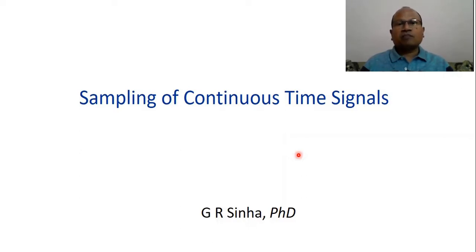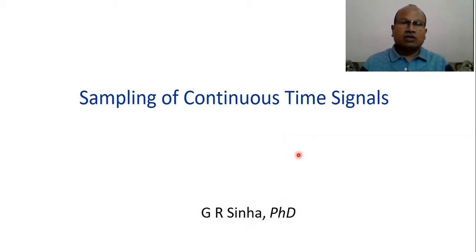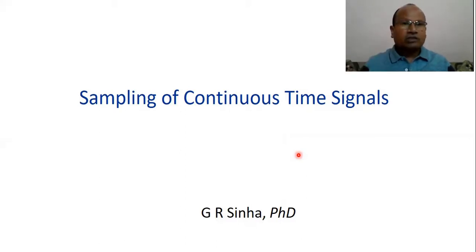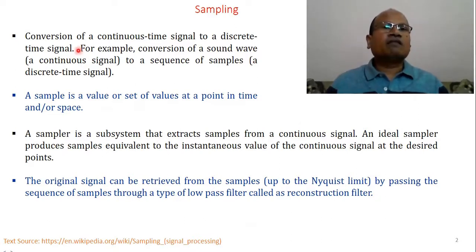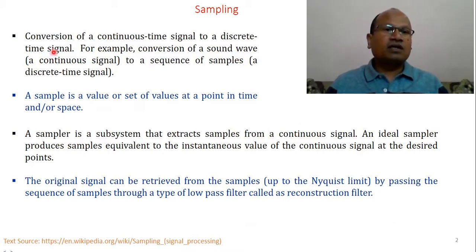Sampling is the most important step used in conversion from analog into digital signal — that is, continuous time signals into digital signals. Although continuous time signals are not directly converted into digital, they are converted into discrete time signals. Sampling is defined as the conversion of a continuous time signal to a discrete time signal.